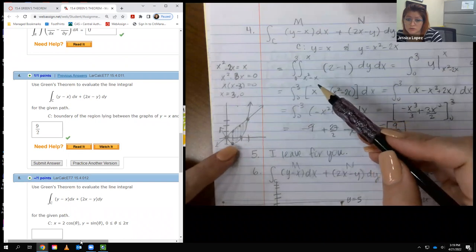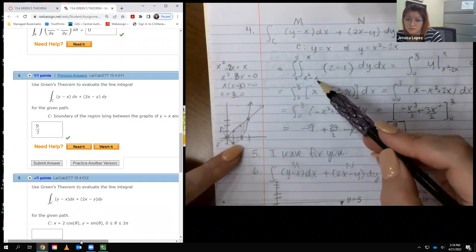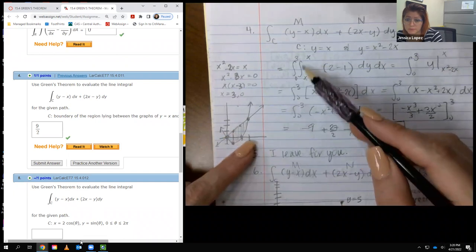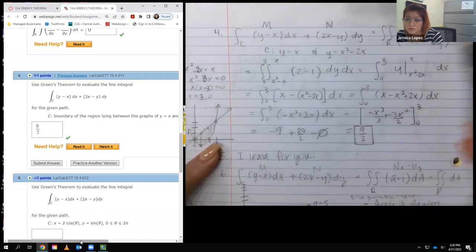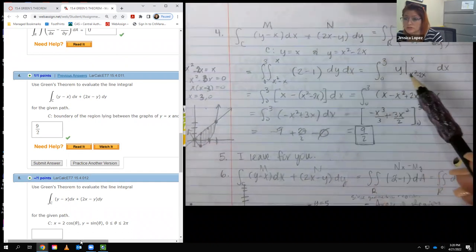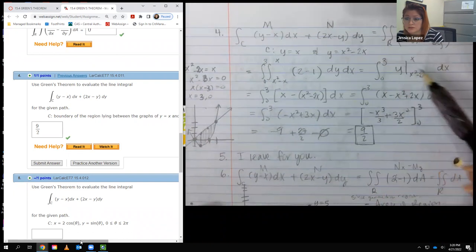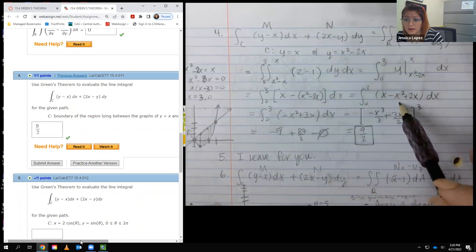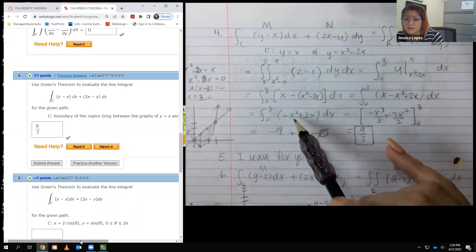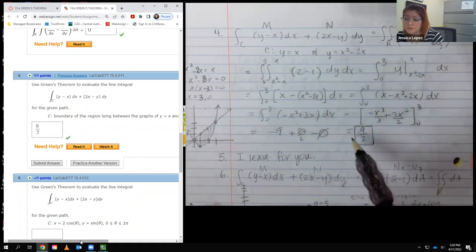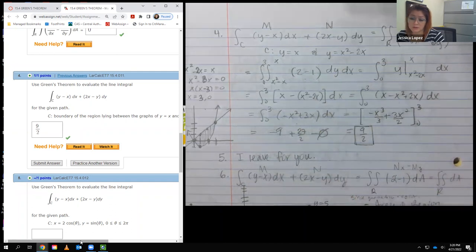Now if you notice, your Y's go from the bottom, this curve, to the top, that curve. And then your X's go from zero to three, and so those are my bounds. So when I integrated Y, when I integrated one, it turned out to be Y. And then I plugged in my bounds, distributed this negative, I eventually combined my like terms. And then I did my integration of each term and then evaluated them at three, evaluated them at zero, found that difference, and it came out to nine halves.